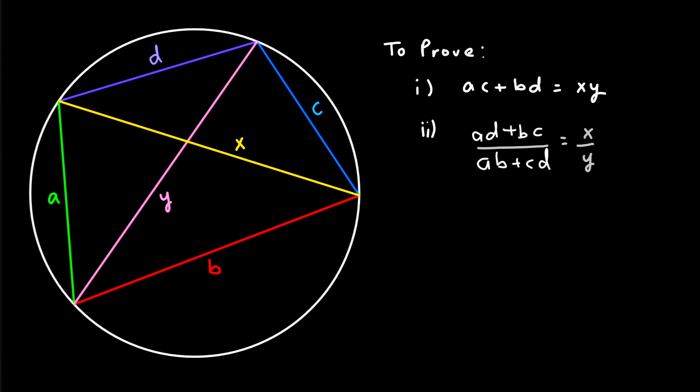Today we have a very nice geometrical theorem known as Ptolemy's theorem. It basically states a very beautiful relation between the side lengths and the diagonals of a cyclic quadrilateral. There are two equations which satisfy this relation. The first equation is the product of AC plus the product of BD equals the product of the diagonals. The second equation is AD plus BC divided by AB plus CD equals X upon Y. This is Anmul Mishra and now let us see the solution.